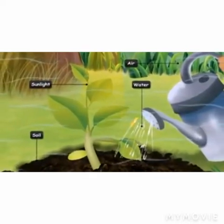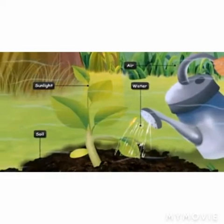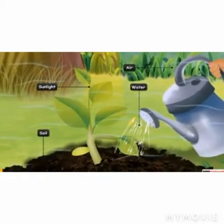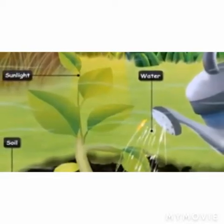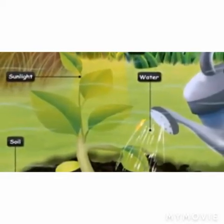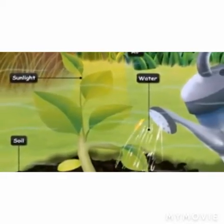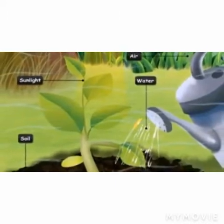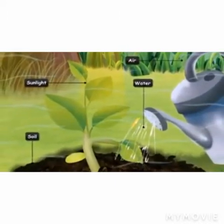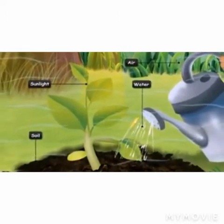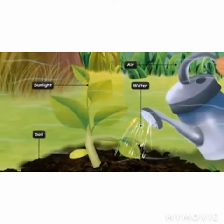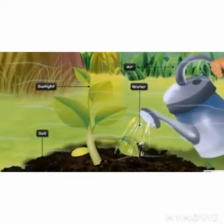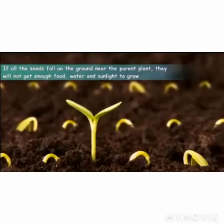Now the second point is: why is dispersal needed? Why can't seeds grow near their mother plants? The reason is very simple. We all know that seeds require soil, minerals, water, air and sunlight for their proper growth and development.